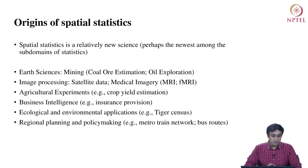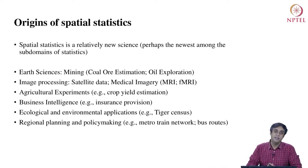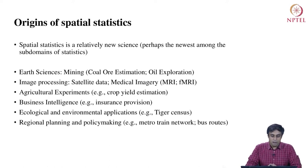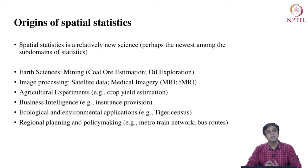More modern applications include image processing using satellite image data, which is one of the most popular applications of spatial statistics. There is also medical imagery such as MRI and fMRI, crop yield estimation for agricultural experiments, insurance provision by business intelligence consulting firms, and conducting tiger census by ecological and environmental scientists.